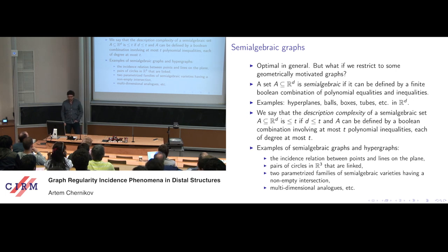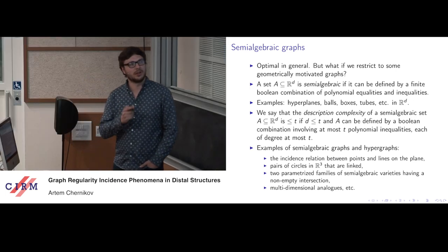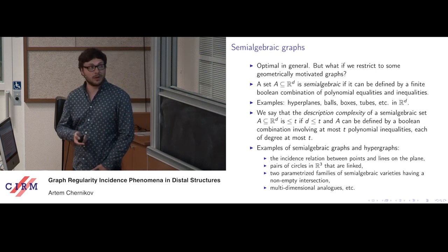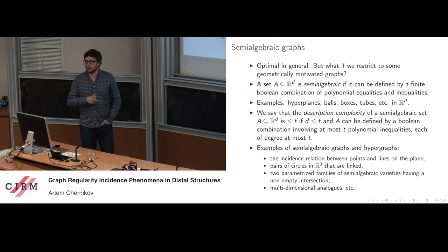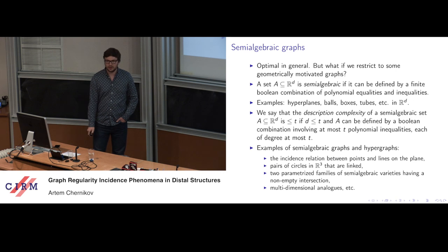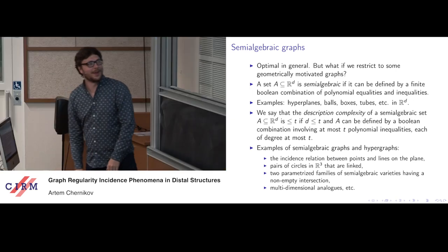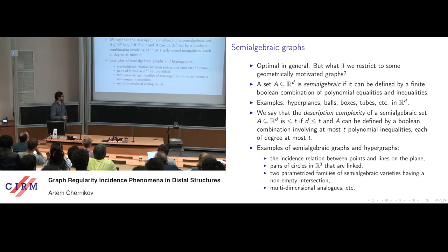Some examples of semi-algebraic graphs or hypergraphs relevant for this talk: first, the incidence relation between points and lines encoded by their parameters is a semi-algebraic graph. Similarly, one can define the edge relation as pairs of circles in three-dimensional space that are linked. One can also consider parameterized families of semi-algebraic varieties having non-empty intersection, and various multidimensional generalizations.